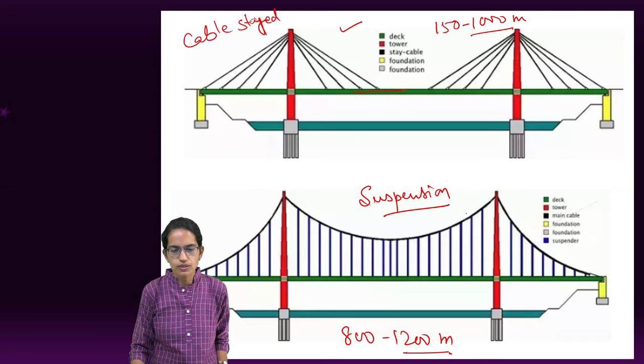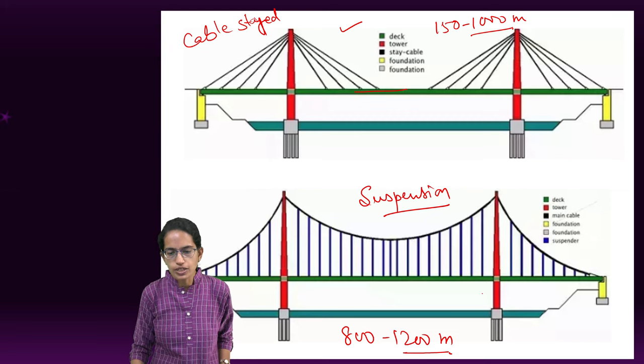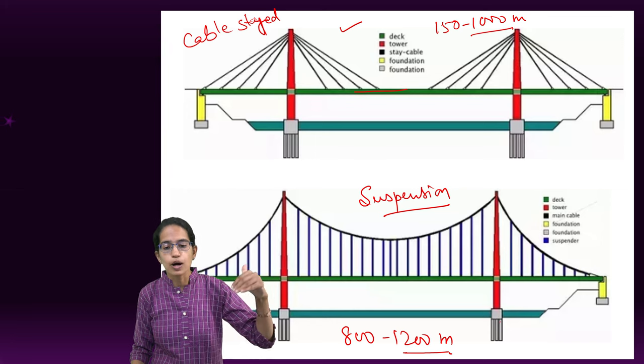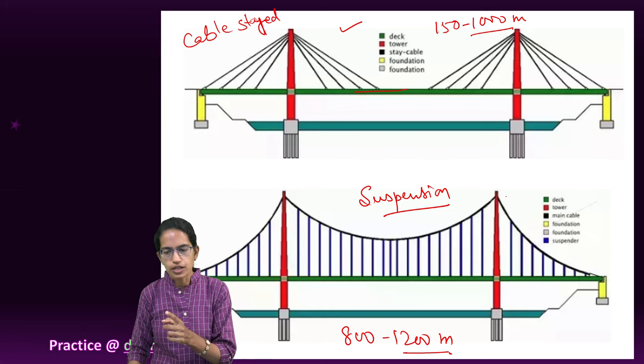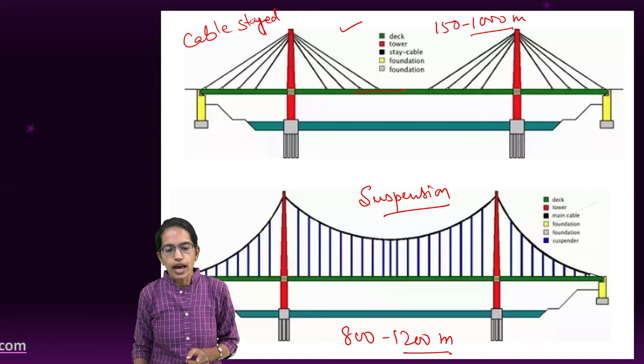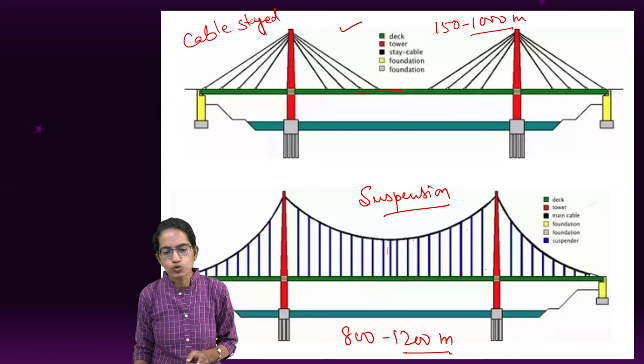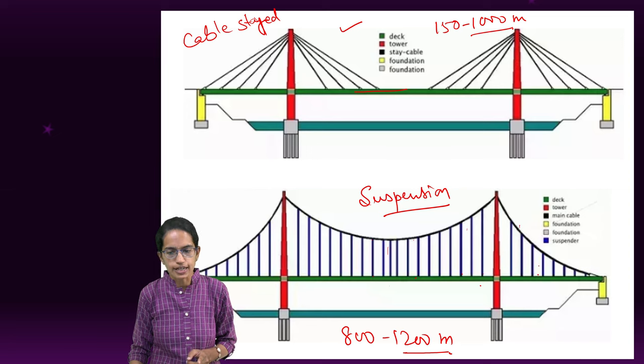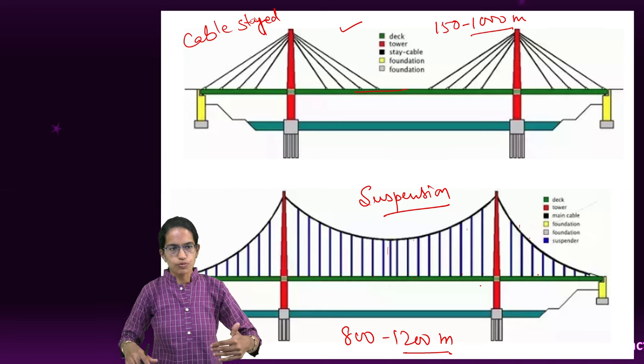However, in the case of suspension bridge, there are towers which are embedded in the foundation, but these towers are connected with the main cable, and then there are suspended cables connecting the deck. So the load is distributed.